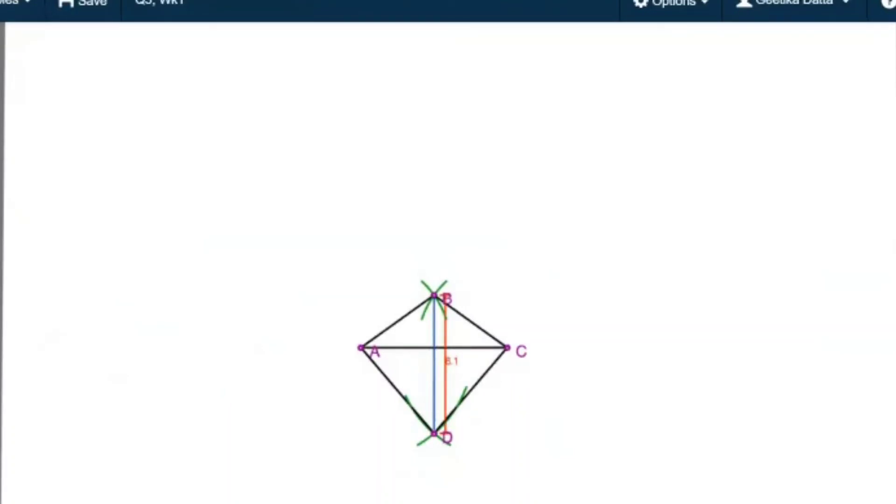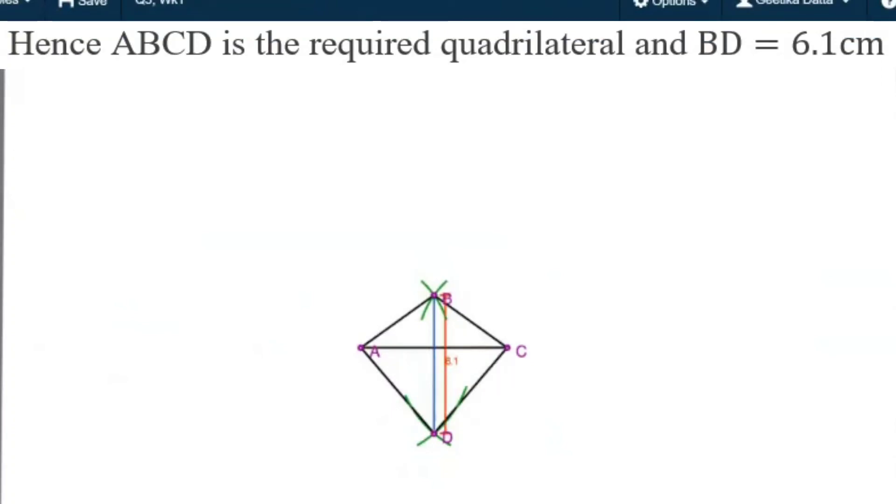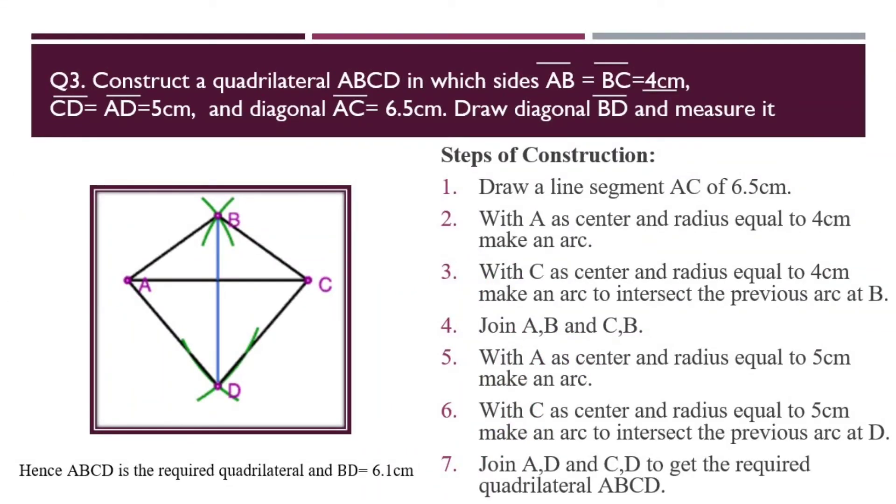I will write my final statement. Thus ABCD is the required quadrilateral and BD is equal to 6.1 centimeters. The rest of the parts of this worksheet can be done in a similar manner. So I hope you should not have any problem in doing that. If you have any problem, watch the two videos of the worksheet once again. I am sure it is going to be helpful to you. Thank you so much.